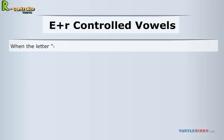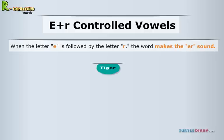When the letter E is followed by the letter R, the word makes the E-R sound, as in tiger. Listen as you say the word tiger. Read the following words to hear the E-R sound: Tiger, lobster, runner.